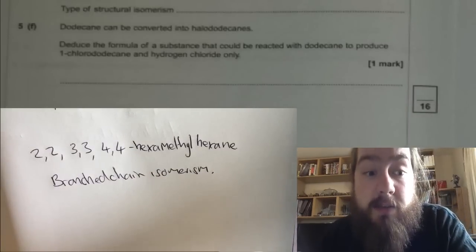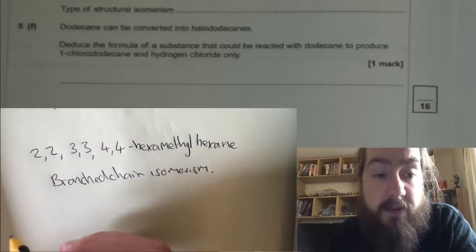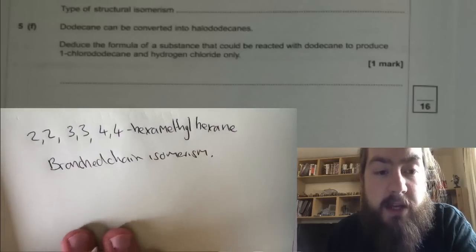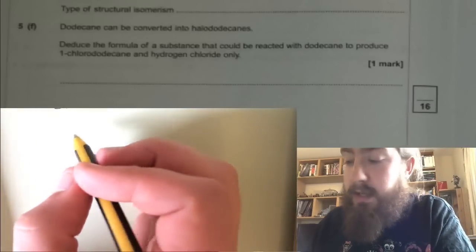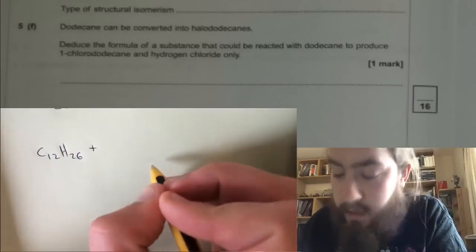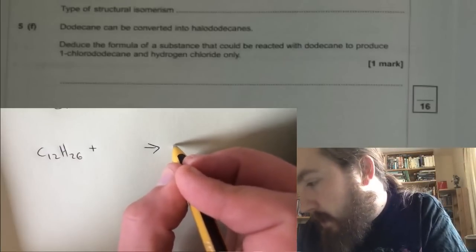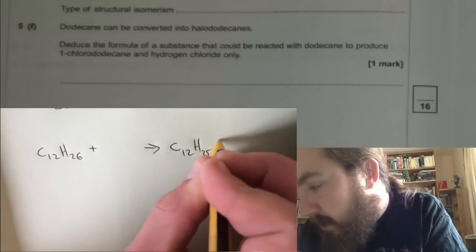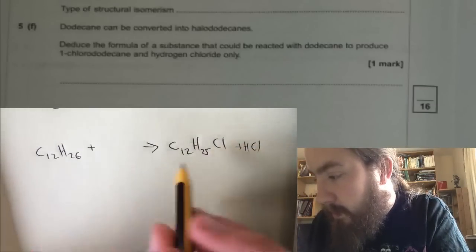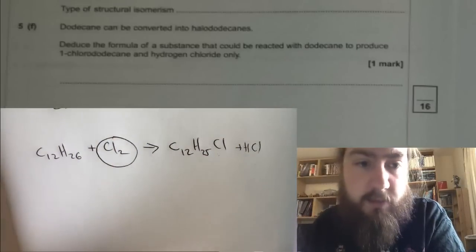Part f. Dodecane can be converted into halododecanes. Deduce the formula of a substance that could be reacted with dodecane to produce one chlorododecane and hydrogen chloride only. We can work this out: dodecane is C12H26, we're adding something, and we're ending up with one chlorododecane which is C12H25Cl plus HCl. It's quite obvious that we've added two chlorines, so we end up with Cl2. Your answer will be Cl2.